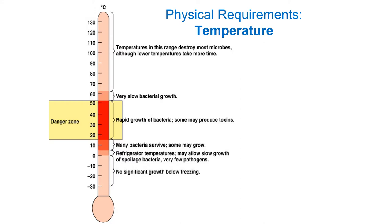The danger zone is called that because if you leave food out in this temperature range, it will be colonized by bacteria quite quickly and cause spoilage. Food spoilage is caused by bacteria and fungi breaking down food and releasing waste products. For most bacteria, they can survive and reproduce up to a maximum temperature of about 50 degrees Celsius, and will stop reproducing or die above that.